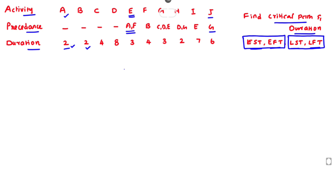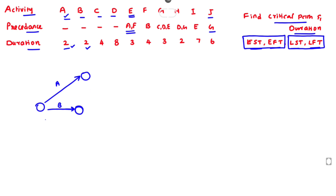Activities A, B, C, and D don't have any precedence relationship. So we can draw them as starting activities. Here is activity A with no preceding activity, then activity B, then activity C, and here is activity D — all drawn from the start node.